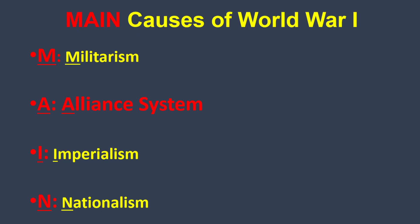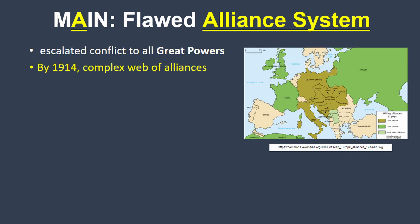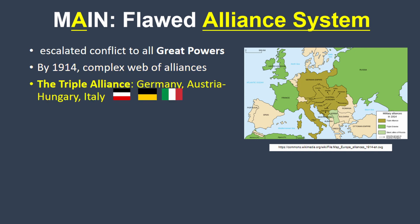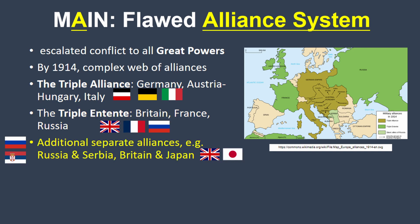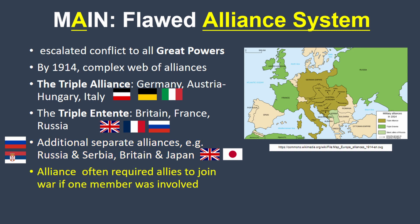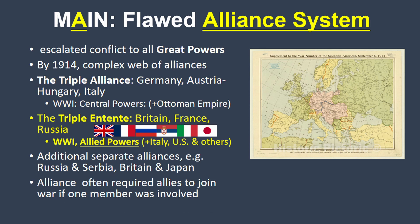Now the flawed alliance system. This was the most direct reason why a regional conflict escalated to involve all of the great powers. By 1914, the great powers were sorted into a complex web of alliances. The Triple Alliance included Germany, Austria-Hungary, and Italy, and the Triple Entente included Britain, France, and Russia. But there were also separate alliances, like that between Russia and Serbia. These alliances often stipulated that if one nation went to war, its ally would join them. Confusingly, the Triple Alliance eventually became the Central Powers, and the Triple Entente became the Allied Powers.